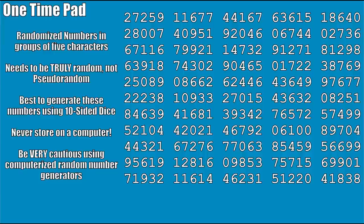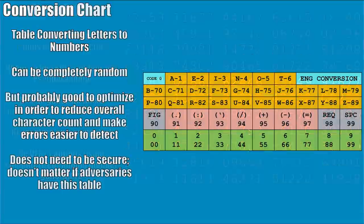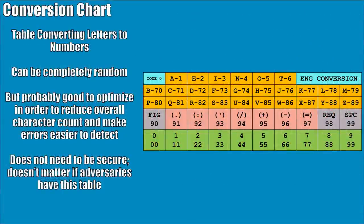For brevity today, the one-time pad we'll be using was generated using an online generator. Up next is the conversion chart. A conversion table is simply a table that converts letters to numbers. However, technically a conversion table could be completely randomized — you could randomly assign numbers to letters using dice or some other method.